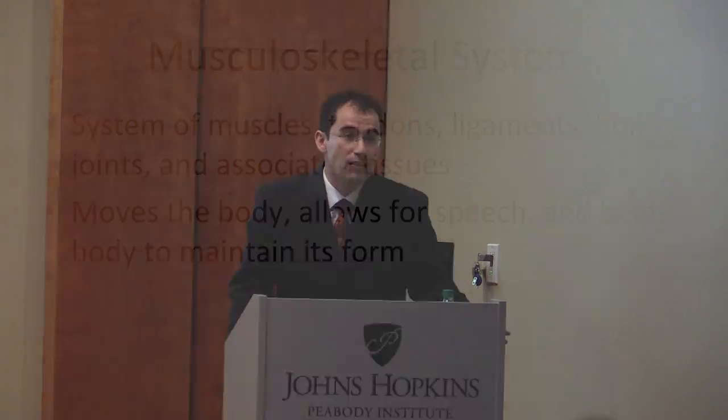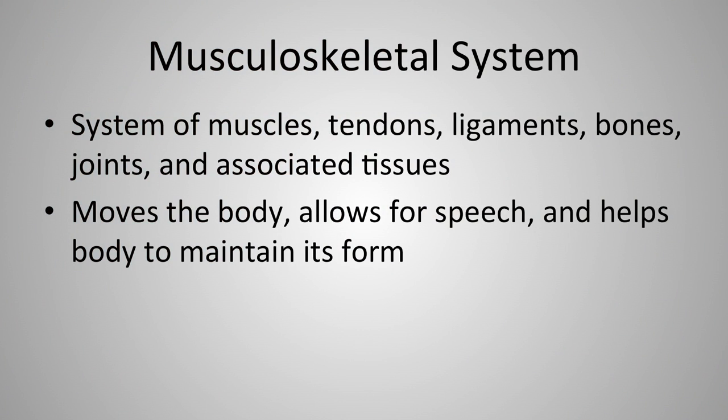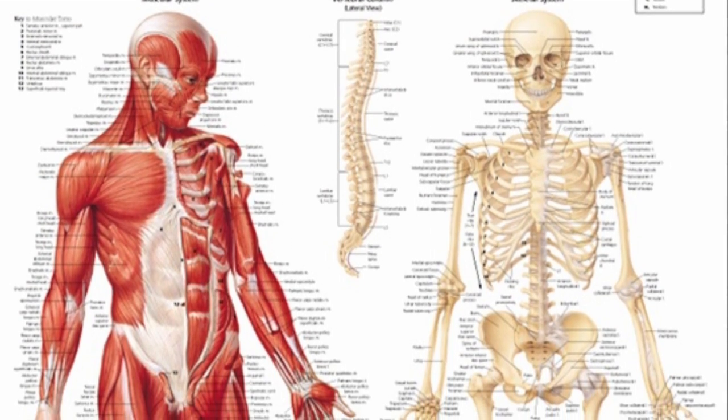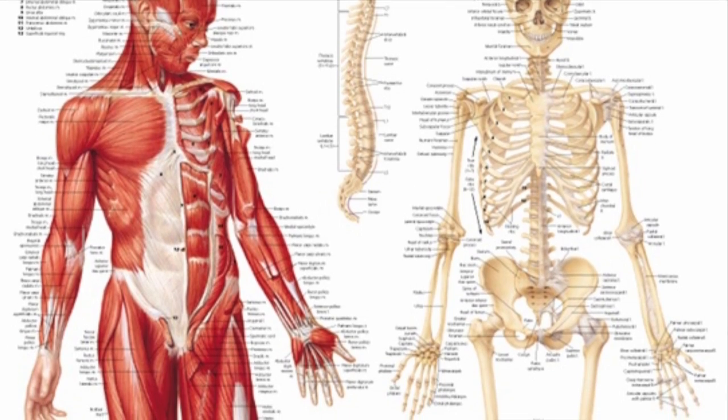The musculoskeletal system comprises muscles, tendons, ligaments, bones, joints, and a number of associated tissues. It moves our bodies, allows for speech and singing, and helps the body maintain its form. Tendons connect muscles to bones, ligaments connect bones to each other via cartilage, and this system comprises the entire body.